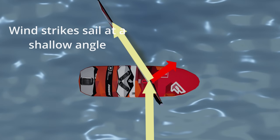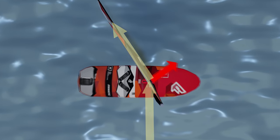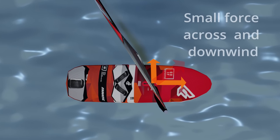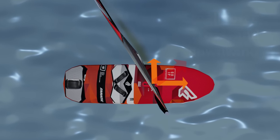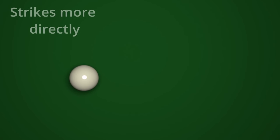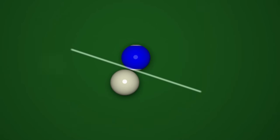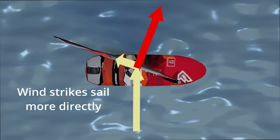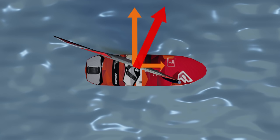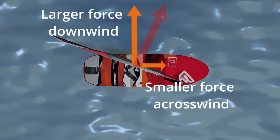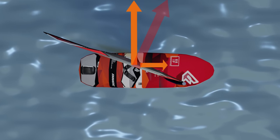If the sail has not been pulled in very far, the force from the wind perpendicular to the sail is also small. Similarly, when the cue ball strikes the ball more directly, the transferred force is again perpendicular to the sail and is also much larger. So when the sail is pulled in quite far, the force transferred is almost directly downwind, and only a small force is generated across the wind in a forward direction.